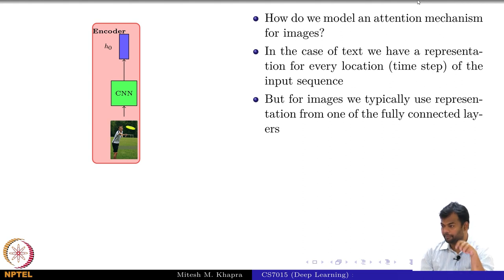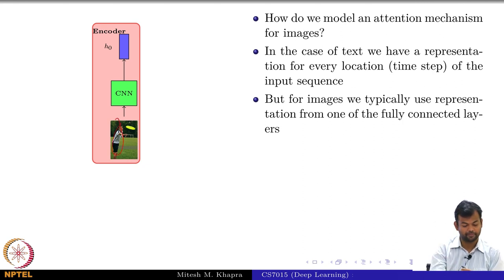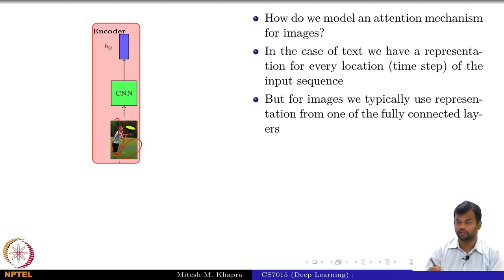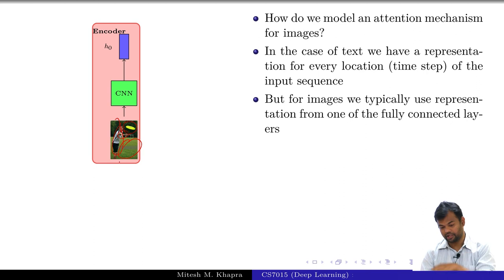When I am generating the word 'man' I would want to focus only on the man and not on any other part of the image. Similarly, when I am generating the word 'frisbee' I would like to focus on the frisbee; when I am saying 'throwing' I would like to focus on his hand action; and 'in a park' I would like to focus on the background. So it does make sense that each word in the description is coming from a different position in the image.